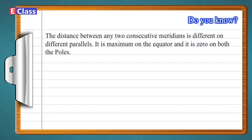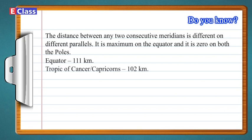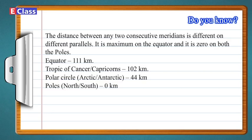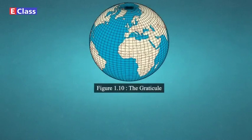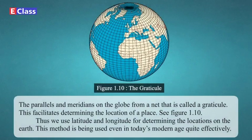Do you know? The distance between any two consecutive meridians is different on different parallels — it is maximum on the equator and 0 on both the poles. Equator: 111 km; Tropic of Cancer or Capricorn: 102 km; Polar circles (Arctic or Antarctic): 44 km; Poles (North or South): 0 km. Figure 1.10 — The Graticule: The parallels and meridians on the globe form a net that is called a graticule, which facilitates determining the location of a place.